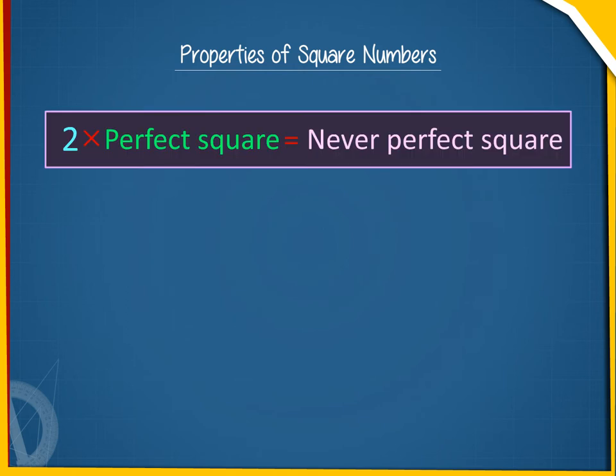Property 6: Twice a perfect square is never a perfect square. For example, 2 × 4 equals 8, which is not a perfect square.